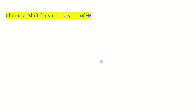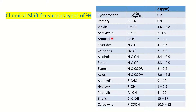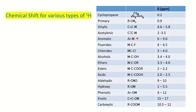First we'll see the chemical shift value table, which you have to learn to solve the problems. The chemical shift values given in the problem are for specific characteristic protons in parts per million (ppm). For cyclopropane, the value is 0.2 ppm. For primary alkyl protons, the value comes around 0.9 ppm.